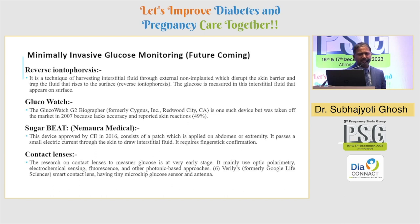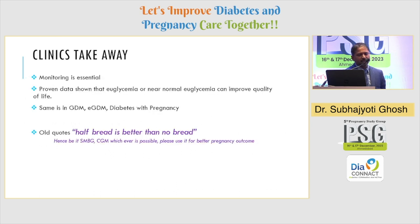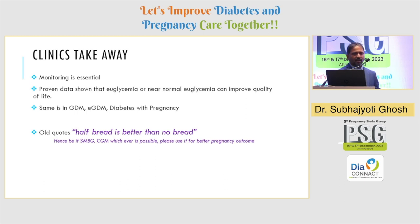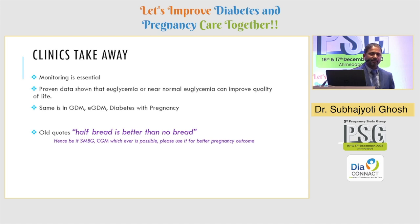The future is about minimally invasive devices like sugar sensors and contact lenses. The clinic takeaway is that monitoring is essential. Proven data have shown that euglycemia or near-euglycemia can improve quality of life — the same can be said for GDM and diabetes in pregnancy. As the old quote says, half a grade is better than no grade. Whether it is SMBG or CGM, whichever is possible, please use it for your patient for the better pregnancy outcome.